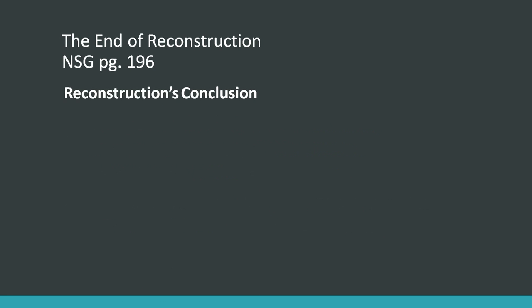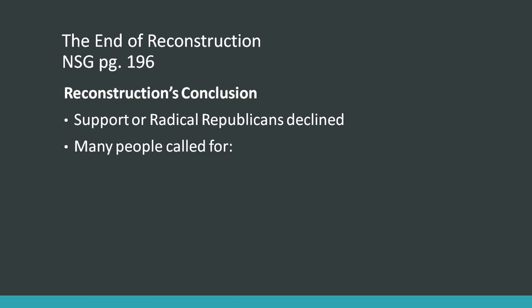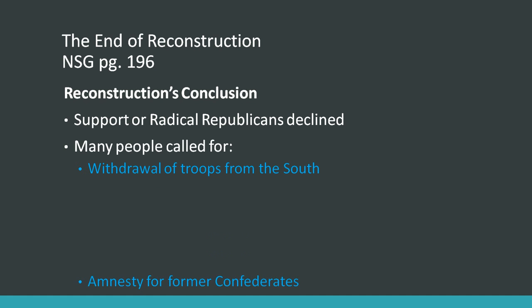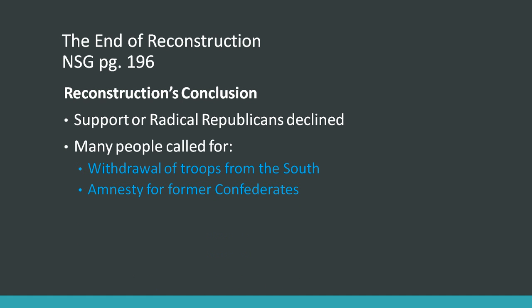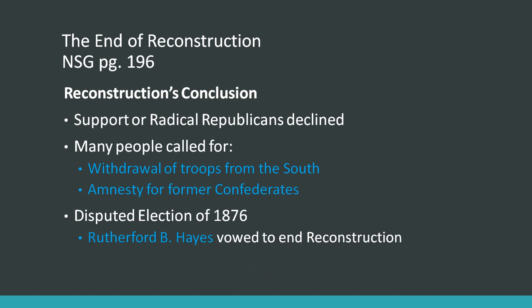Next, Reconstruction's conclusion. Support for radical Republicans declined. Many people called for a withdrawal of troops from the South and amnesty for former Confederates. There was a disputed election in 1876. Rutherford B. Hayes vowed to end Reconstruction and remove all troops, and he won that election.